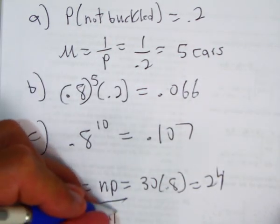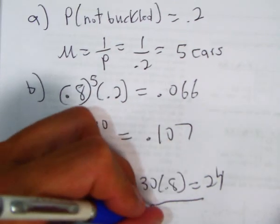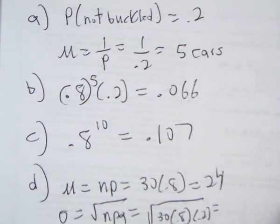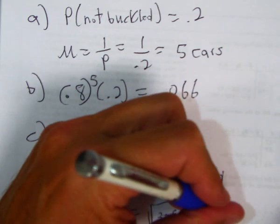Standard deviation is square root of NPQ, square root of 30 times 0.8 times 0.2. And if you do that, you get about 2.19 drivers.